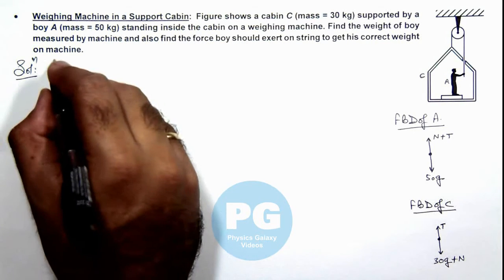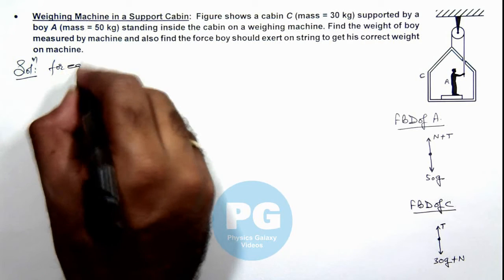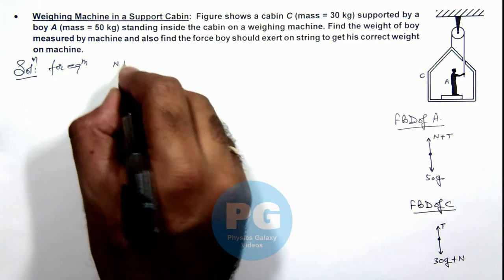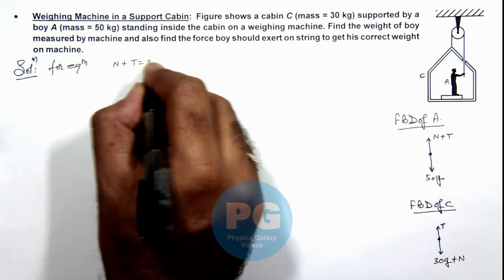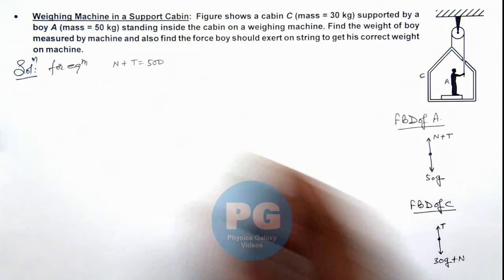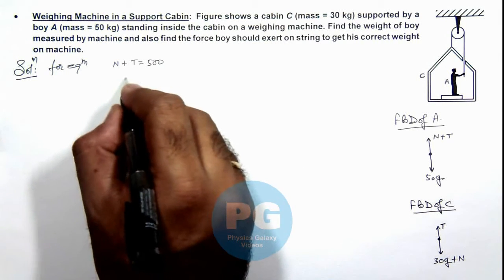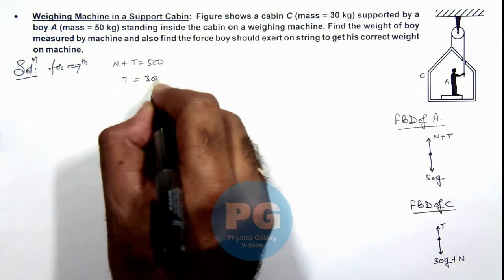So here we can write for equilibrium: N plus T equals 50g, that is 500. And for cabin we can write T equals 300 plus N.